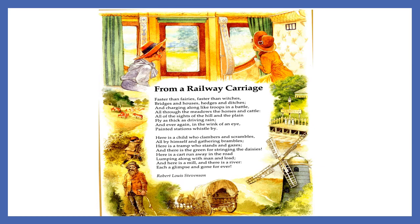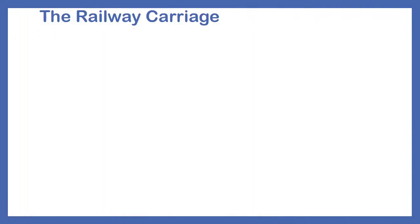It's a beautiful poem full of imagery. In this poem the poet shares his experience of a railway journey and presents natural scenes seen from the windows of the railway carriage. In the first stanza, the poet describes the movement and speed of the train.